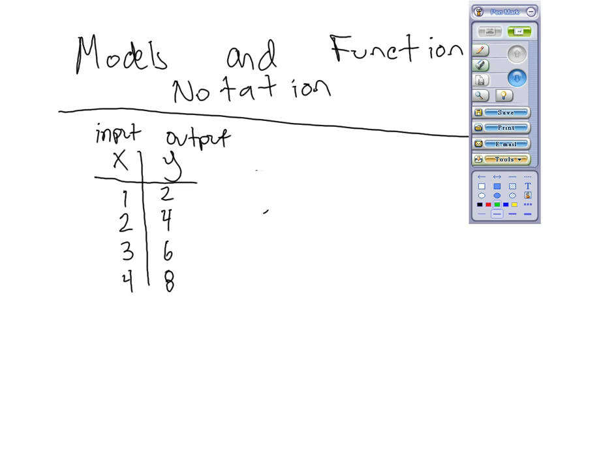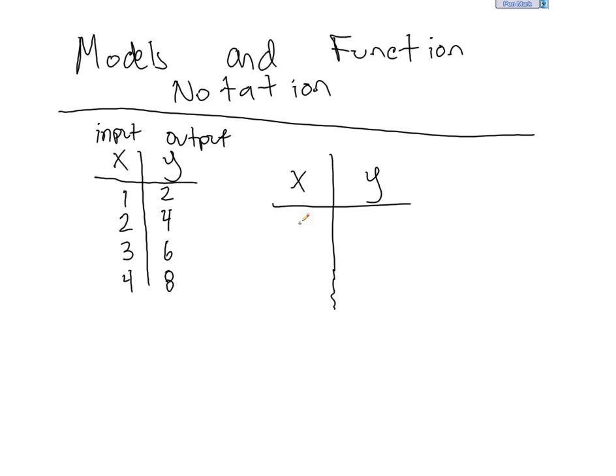So, for instance, if I know that x is 1, then it appears that y is going to be 2 times 1, giving me 2.